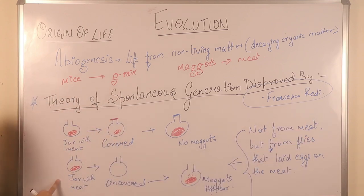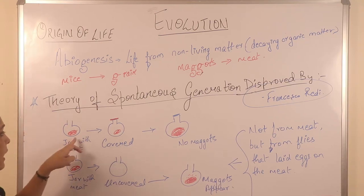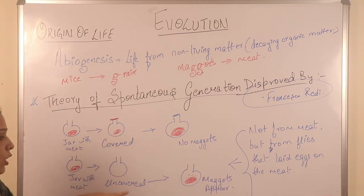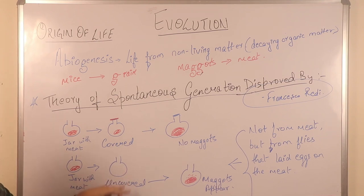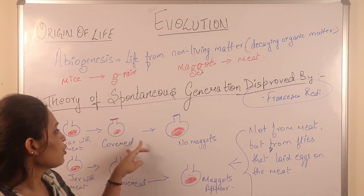What did he do? He took two jars. He put a piece of meat in two jars. One jar was covered, and the other jar was left uncovered — left open.